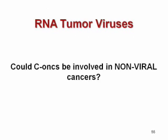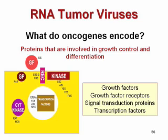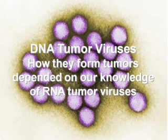Can cellular proto-oncogenes be involved in non-viral cancers? The answer is yes. There are about 40 of these cellular proto-oncogenes that, under the right circumstances, can be altered in non-viral cancers to give a tumor. As you might expect, they encode things like growth factors, transcription factors, and various signal transduction proteins. That brings us to the end of retroviruses, and knowing now about oncogenes and cellular proto-oncogenes, we can go back to the DNA tumor viruses.